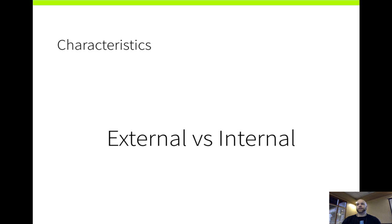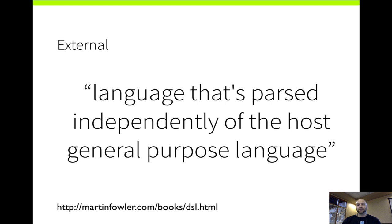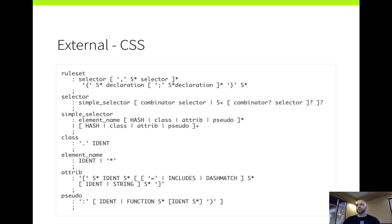Fowler frames it as two types of DSLs: external and internal. For external DSLs, the formal definition is a language that's parsed independently of the host general-purpose language. The example we can use in the context of a web browser is CSS. CSS is a language that's parsed independently of the language of the browser — HTML and JavaScript. CSS has its own parsing engine. This is the language of CSS as displayed in BNF — Backus-Naur Form — and this rule set is passed to a parser generator in the browser that builds up a language so that it can parse the CSS rules. That is an example of an external domain-specific language.